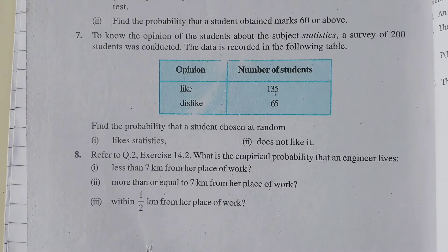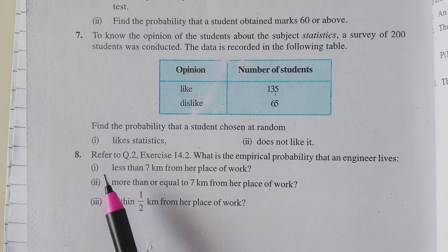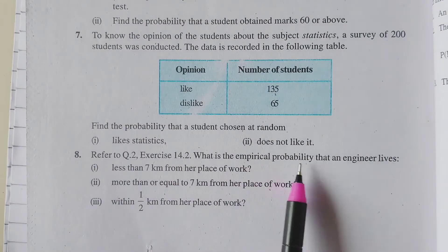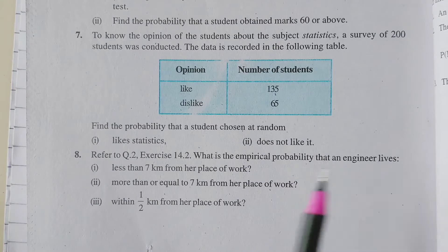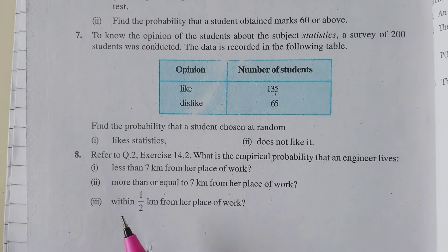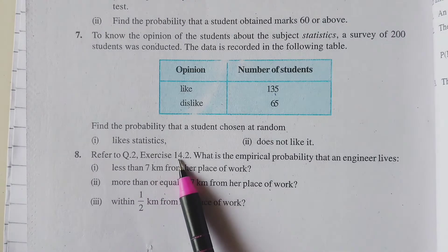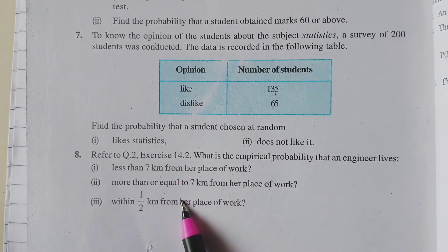Hello students, so today we are going to learn exercise number 15.1, question number 8. Refer to question 2 of exercise number 14.2, what is the empirical probability that an engineer lives less than 7 km from her place of work? We will refer to question number 2, exercise number 14.2 and then we will find the three probabilities.